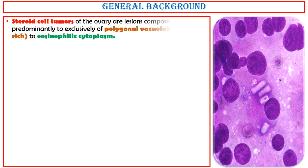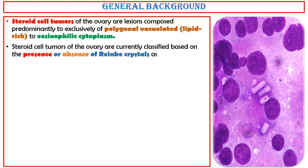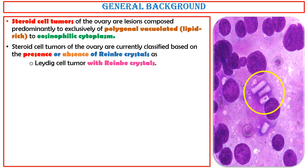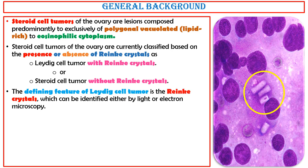General Background. Steroid cell tumors of the ovary are lesions composed predominantly to exclusively of polygonal vacuolated lipid-rich eosinophilic cytoplasm. Steroid cell tumors of the ovary are currently classified based on the presence or absence of Reinke crystals as Leydig cell tumor with Reinke crystals or steroid cell tumor without Reinke crystals. The defining feature of Leydig cell tumor is the Reinke crystals, which can be identified either by light or electron microscopy. Leydig cell tumors comprise 90% of all steroid cell tumors.